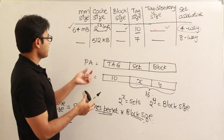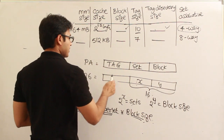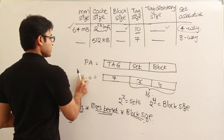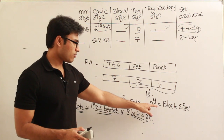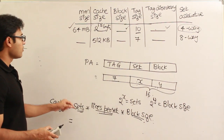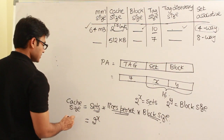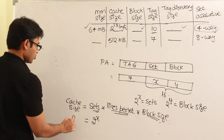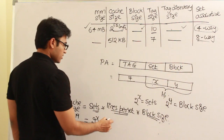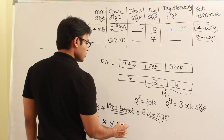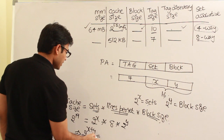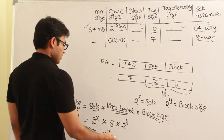For the next question, the physical address is divided into tag, set, and block fields. The tag is given as 7 bits. Cache size is 512 KB, which equals 2^19 bytes. It is 8-way set associative, so lines per set equals 8. With 2^X sets and block size 2^Y, cache size equals 2^X × 8 × 2^Y = 2^19, which means 2^(X+Y) equals 2^16.